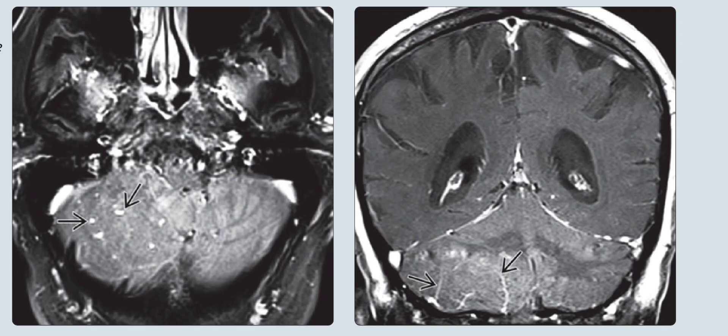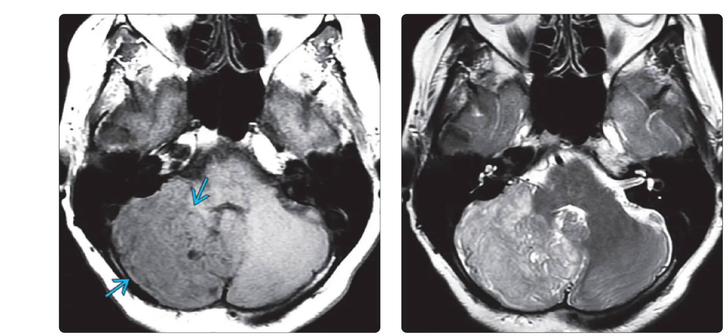These findings were pathognomonic of Lermitte-Duclos disease, so the mass was not biopsied. On the left is the axial T1-weighted MRI in a 57-year-old woman with headaches, showing a mildly hypointense mass in the right cerebellar hemisphere. On the right is the T2-weighted MRI in the same patient, showing the mass is hyperintense with a striated gyreform appearance.